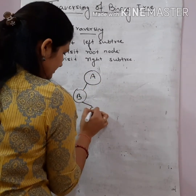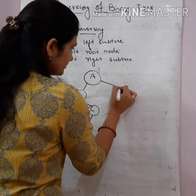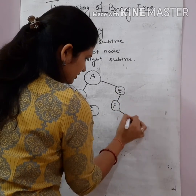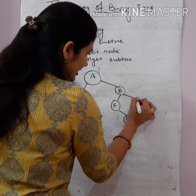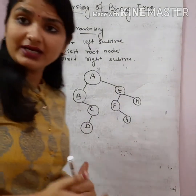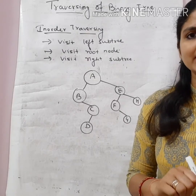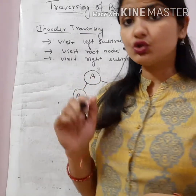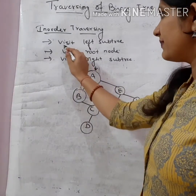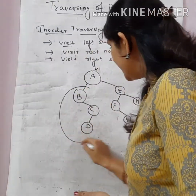Let us take one more example with nodes A, B, C, D, E, F, G, and H. This is a binary tree, and we will apply inorder traversing on it. So how do we apply it? We start with the root node.